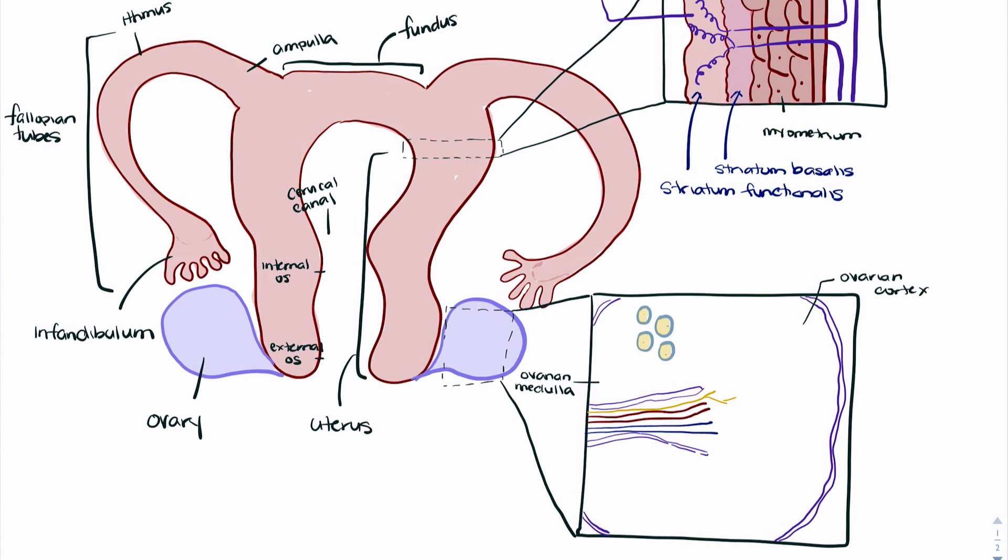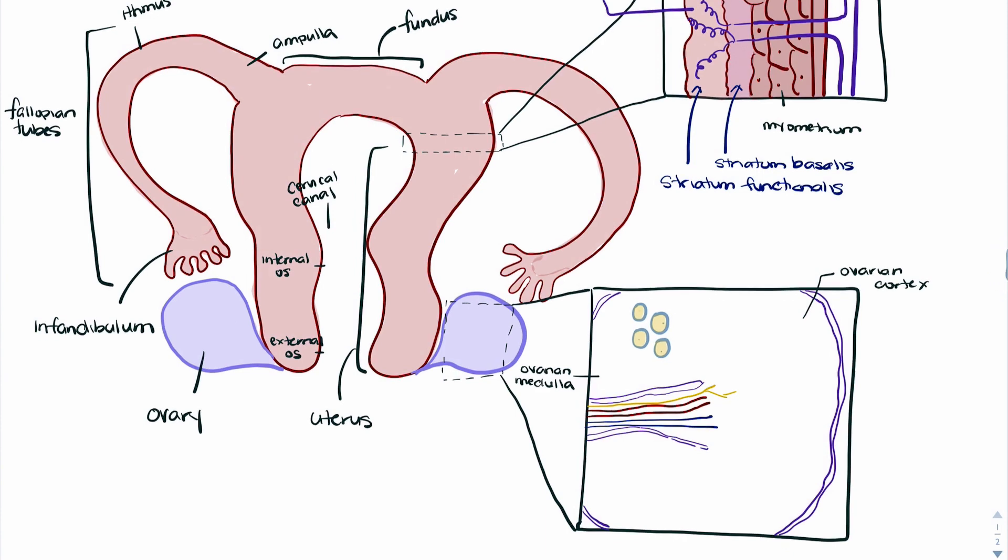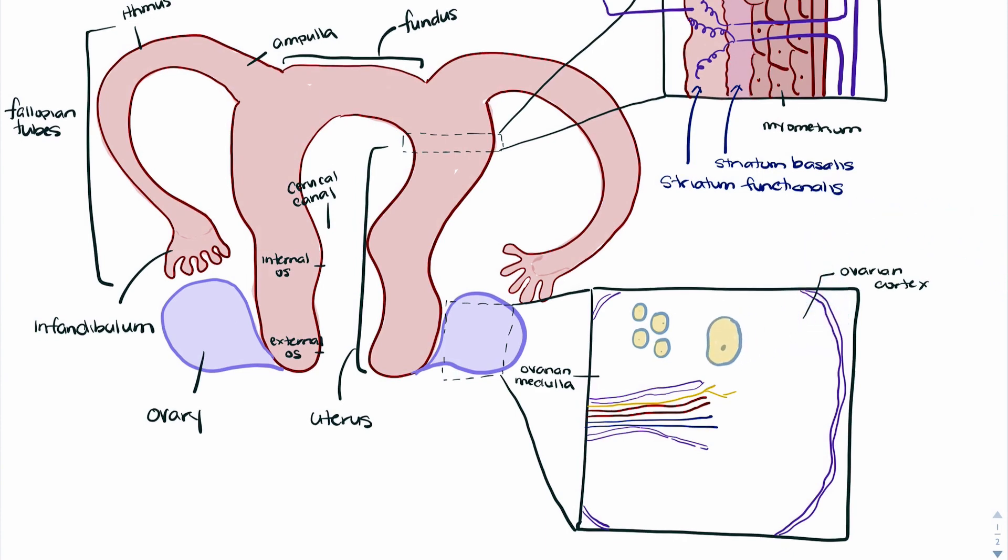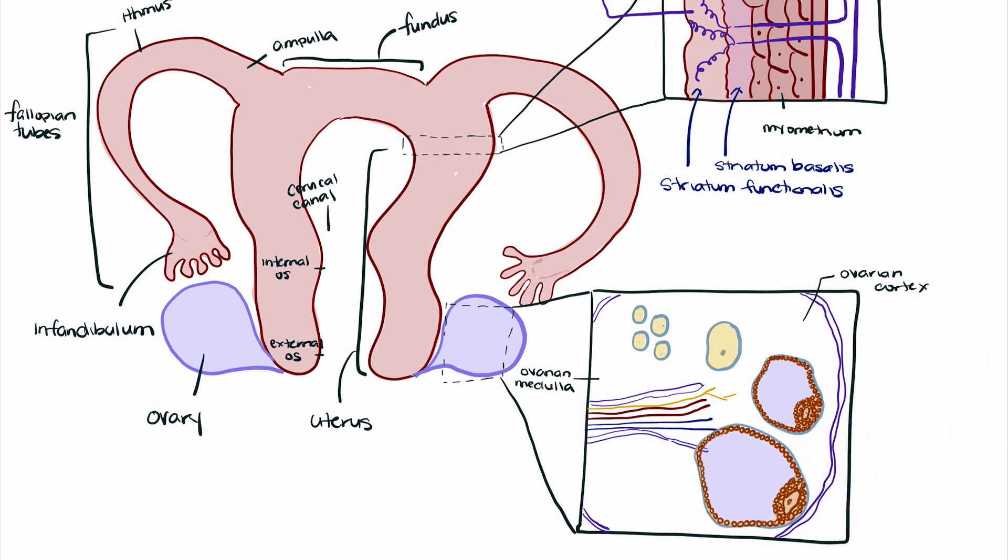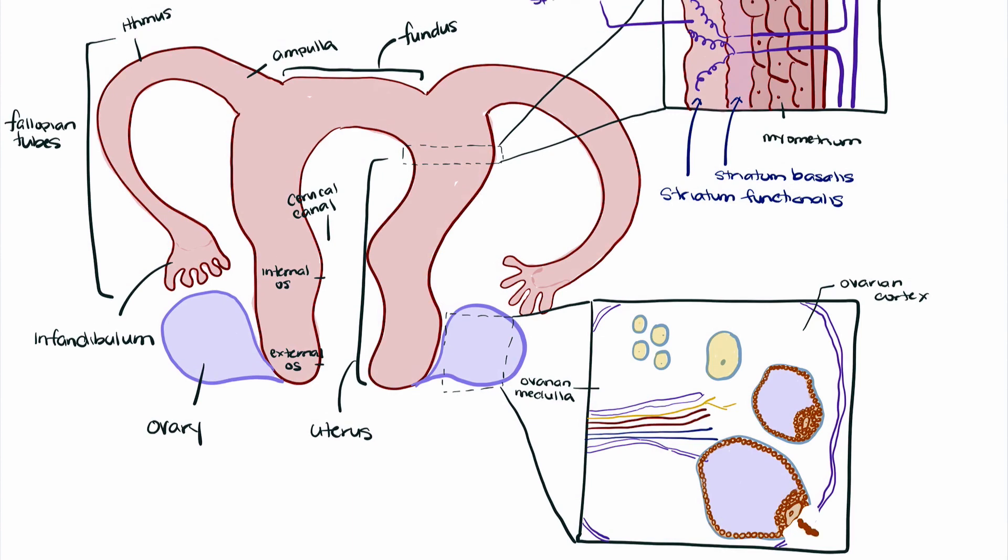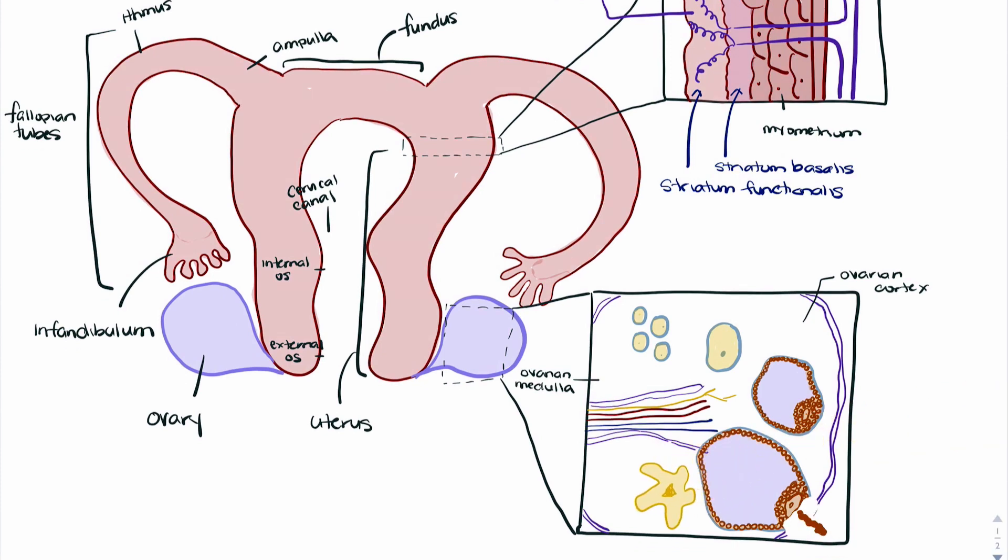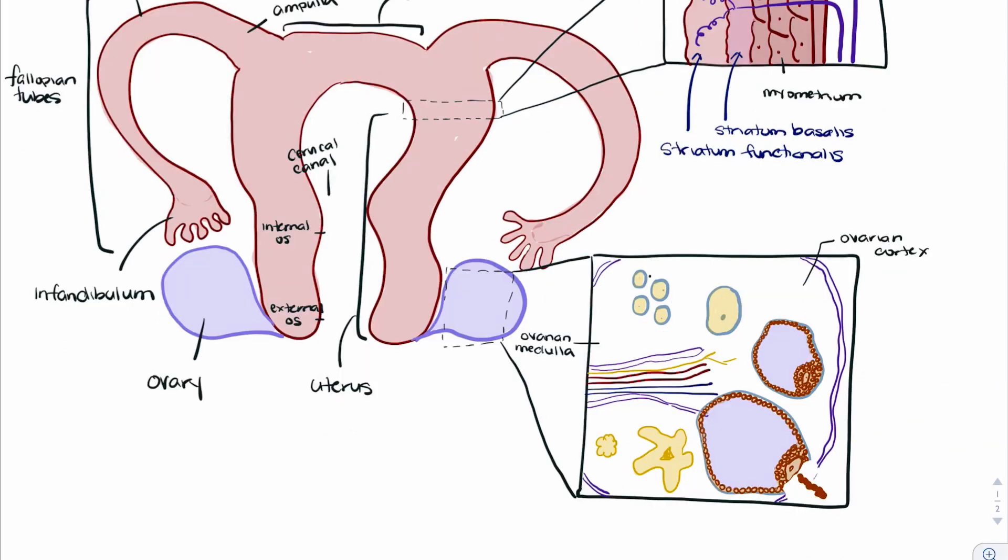If we direct our attention back to the ovarian cortex, we can see follicles in various stages of development. The first is our primordial follicle, followed by our primary and secondary follicles, and then our mature follicle. This is the follicle that will actually have some lysis occurring to it and will release the ovum during the menstrual cycle. Following release of the ovum, this will turn into the corpus luteum, followed by the corpus albicans.